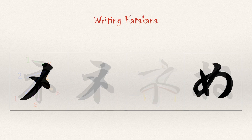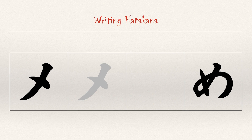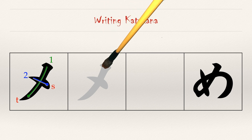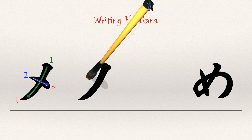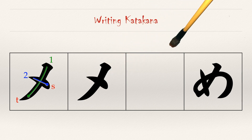Now back to two strokes for Me. The first stroke is the no stroke. And the second stroke crosses the first stroke, much like the second stroke of Nu. Stroke one is the no stroke. Stroke two crosses it.